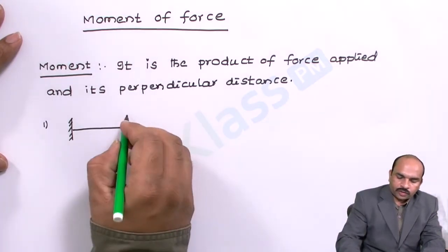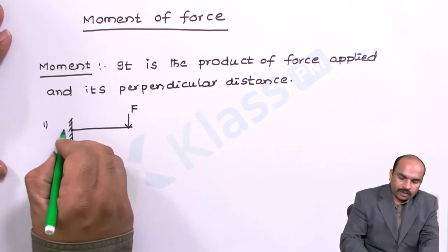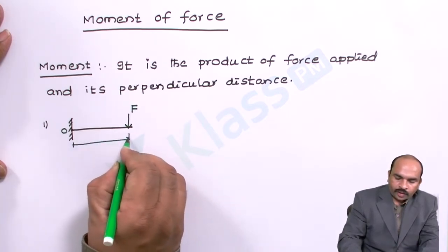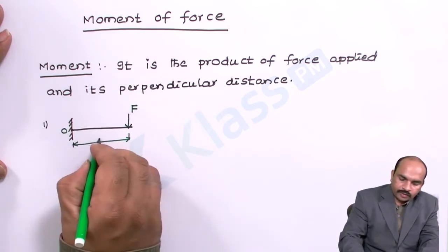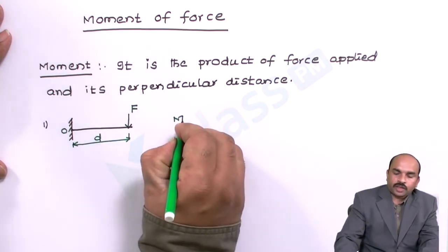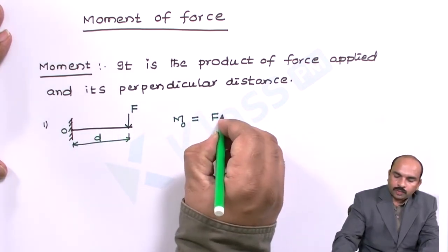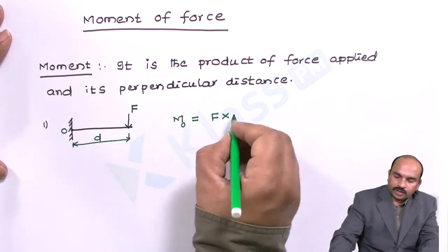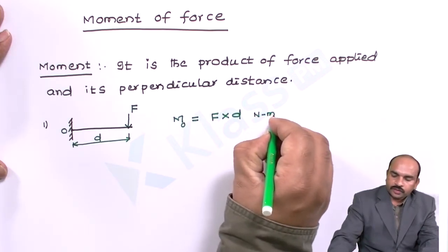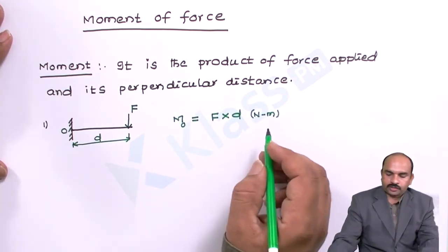Let us say a force F is acting on a body. Let this point be O and its perpendicular distance be D. The moment M with respect to point O is equal to force applied multiplied by perpendicular distance D. We know force unit is Newton and distance unit is meter, so the units for the moment are Newton meters.